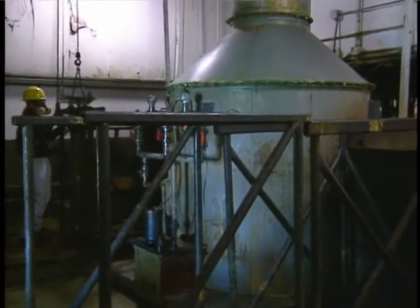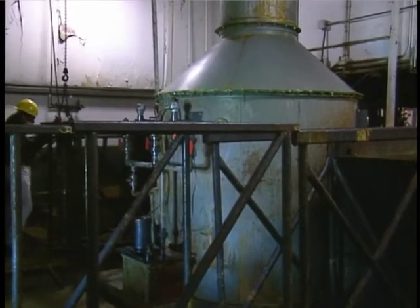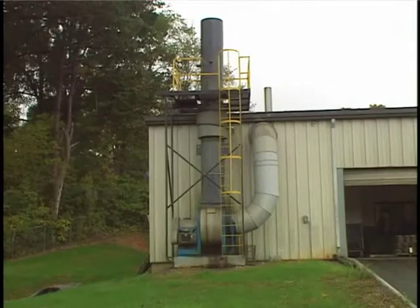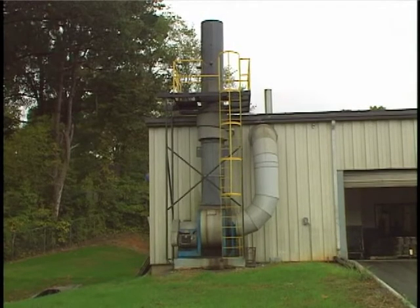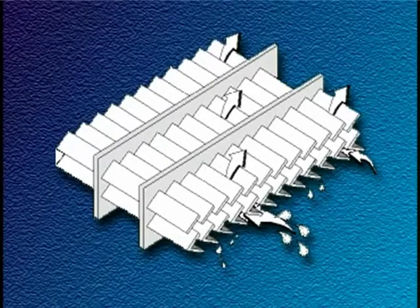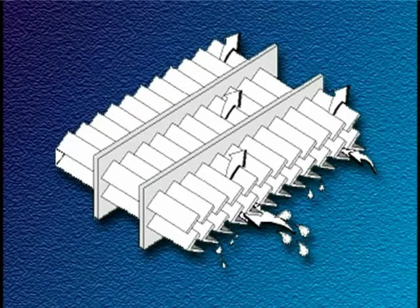In all wet scrubbers, the process of contacting the gas and liquid streams results in entrained droplets. Since these droplets contain the contaminants, they must be removed before the gas stream exits the unit. This is referred to as mist elimination or entrainment separation. The most common mist eliminators are chevrons, mesh pads and cyclones. Chevrons are simply zig-zag baffles that cause the gas stream to turn several times as it passes through the mist eliminator. The liquid droplets are collected on the blades of the chevron and drained back into the scrubber.